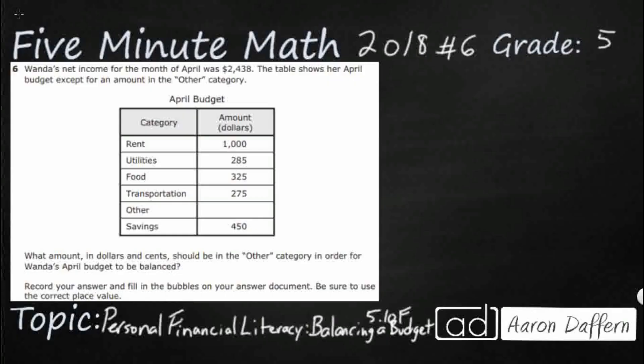So, we have Wanda's net income — that's going to be important — for the month of April was $2,438, and the table shows her April budget except for an other category. Let's take a look at this simple little diagram here.